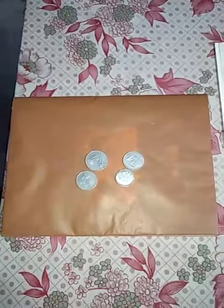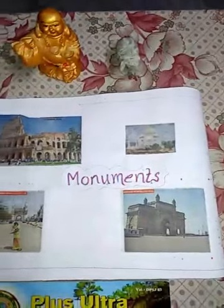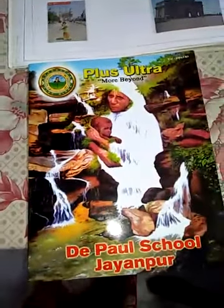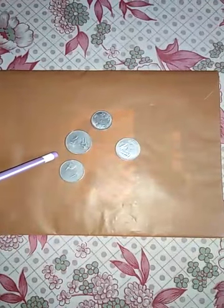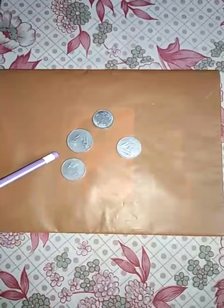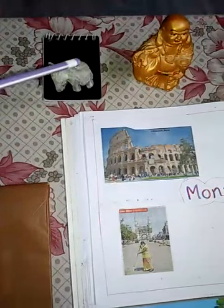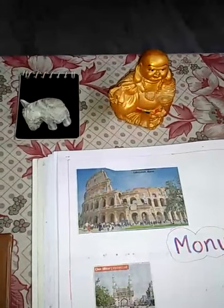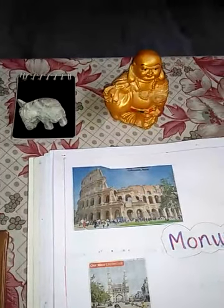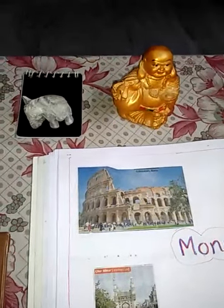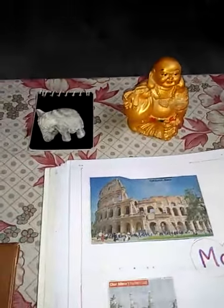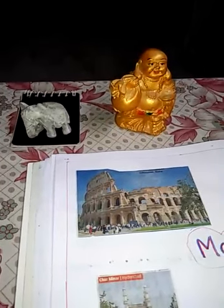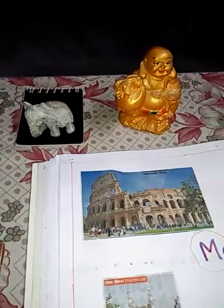Look at the things lying on the table. What are these? Yes, these are coins. And what are these? These are artifacts. Now you may have a question: what are artifacts? Artifacts are things made and used by earlier people, such as household goods like utensils, toys, jewelry, etc.